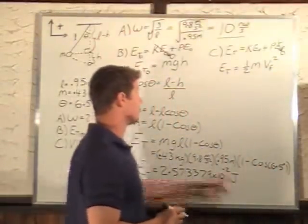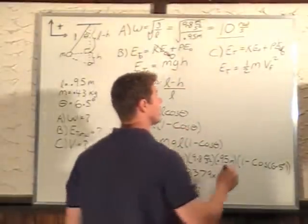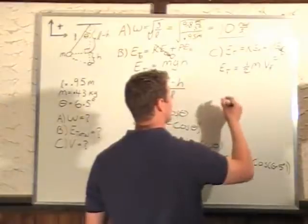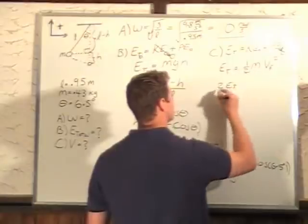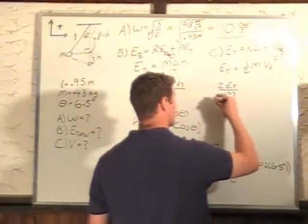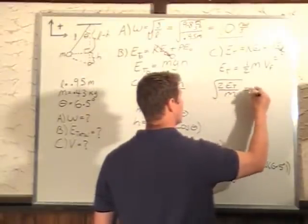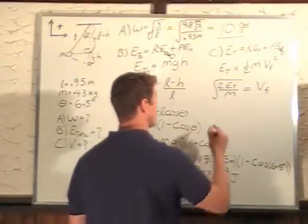We just have to solve for v because we know our total energy. I multiply two over and divide by m, so I get 2 times total energy divided by mass equals v_f squared. I'll take the square root of both sides, so v_f equals the square root of 2E_T over m.